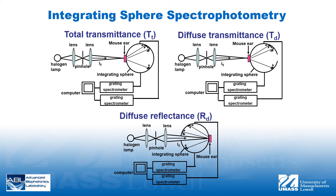An in-house-built single integrating sphere spectrophotometer was used to acquire the total transmittance, diffuse transmittance, and diffuse reflectance over the spectral range of 400 to 1650 nanometers.